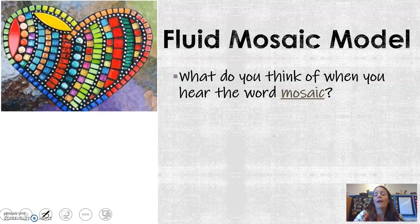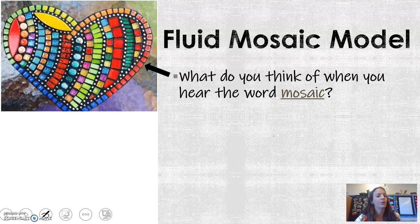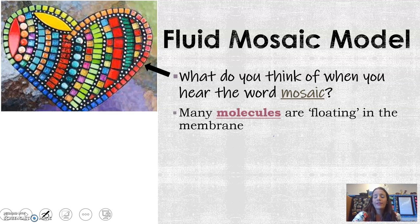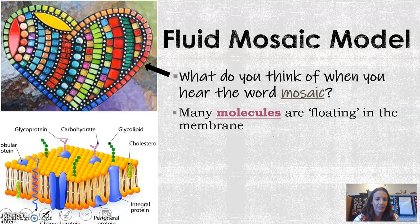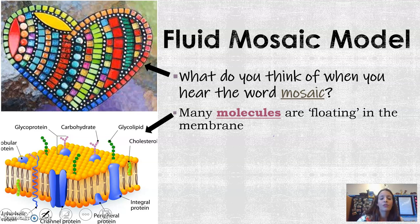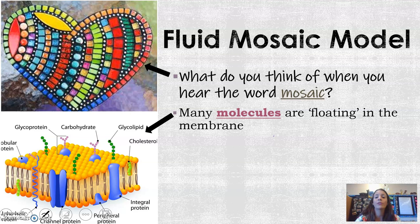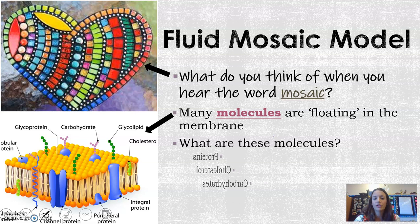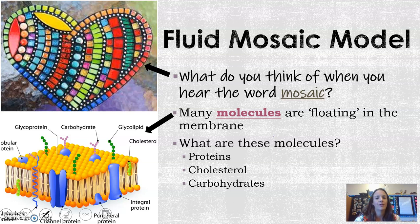The other term is the fluid mosaic model. When you hear the word mosaic, you may think of lots of different colors and pretty stones all put together. The cell membrane is similar because there are many molecules floating in it — things like proteins, carbohydrates, and cholesterol, along with all the heads and tails. These make up almost a mosaic of the cell membrane. The three main components we'll focus on are proteins, cholesterol, and carbohydrates.